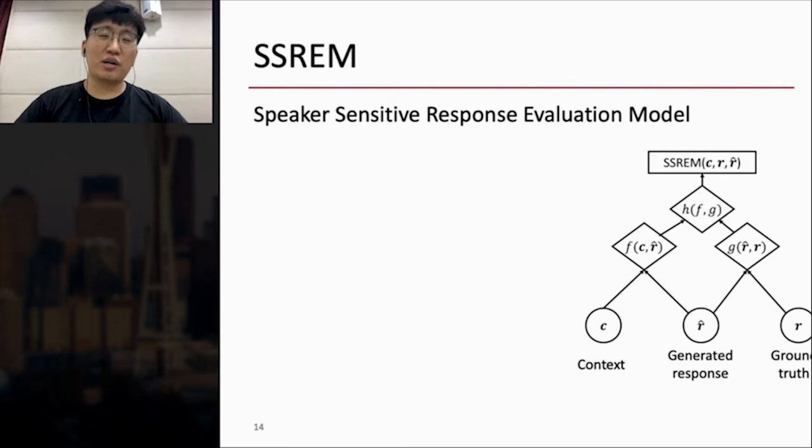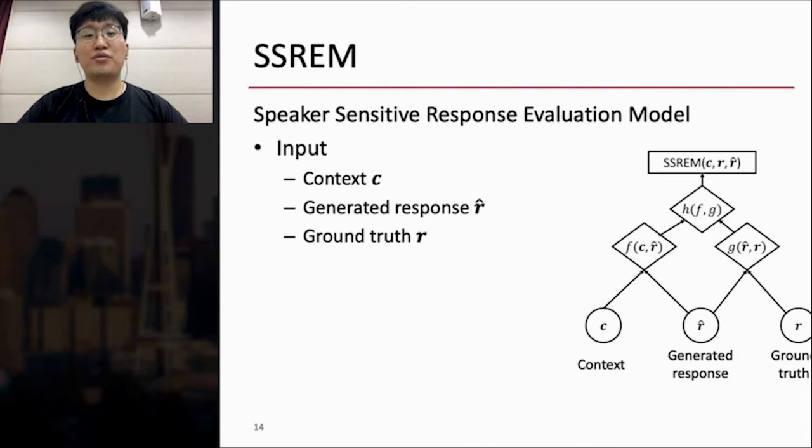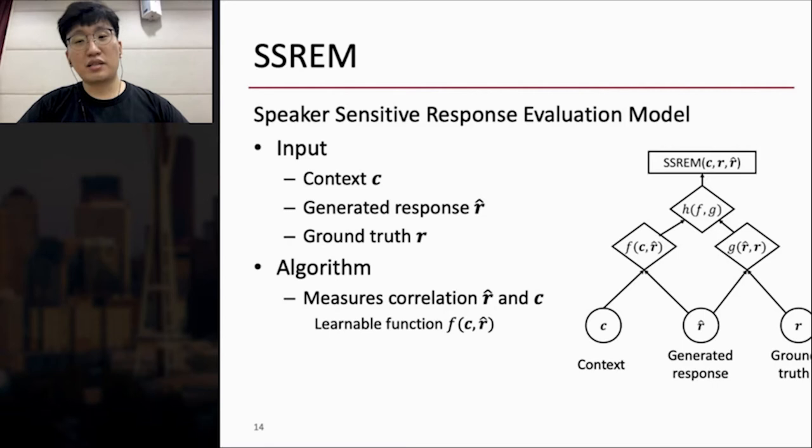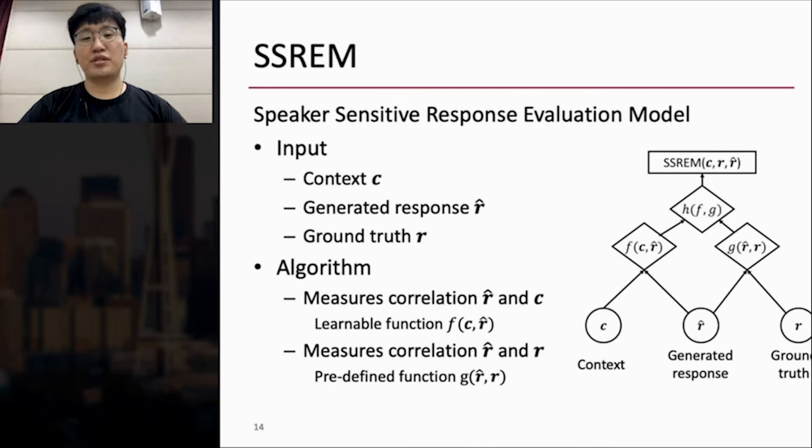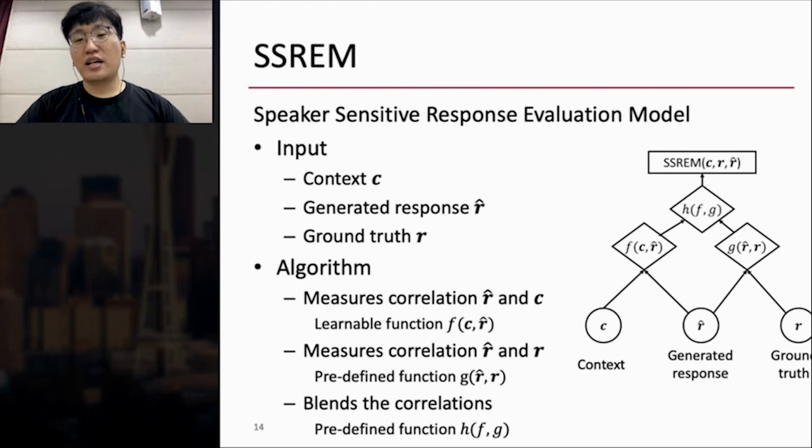From this motivation and observation, I suggest a novel evaluation model named Speaker-Sensitive Response Evaluation Model, SSREM. The right figure shows the structure of the SSREM. And there are three inputs: context C, generated response R-hat, and ground truth R. Then SSREM measures the correlation between generated response and the context by learnable function F. And it measures the correlation between generated response and the ground truth by predefined function G, such as embedding average. Finally, SSREM blends the correlation from F and G functions by predefined function H.